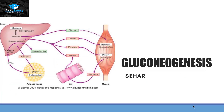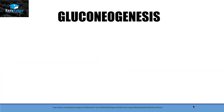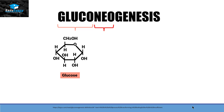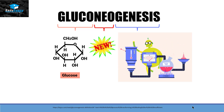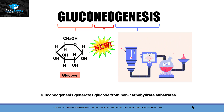Hello everyone, this is Seher from Easy Peasy and the topic we are going to discuss today is gluconeogenesis. If we look at the word gluconeogenesis, it is made up of three different words. Glucose comes from glucose, neo means new, and genesis means production of something. So we are going to produce a new glucose molecule, but this process will take non-carbohydrate substrates in order to generate that glucose.